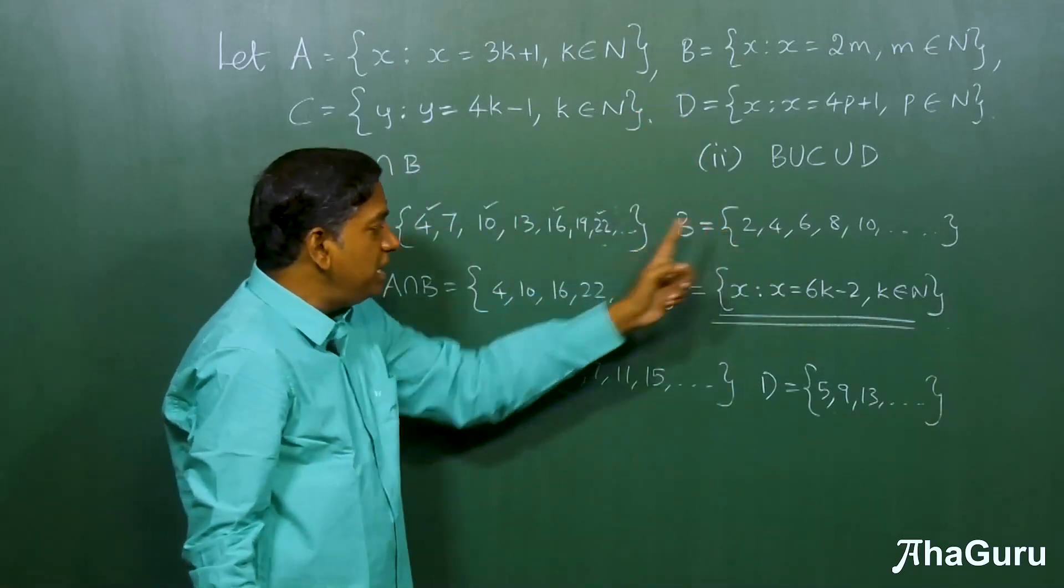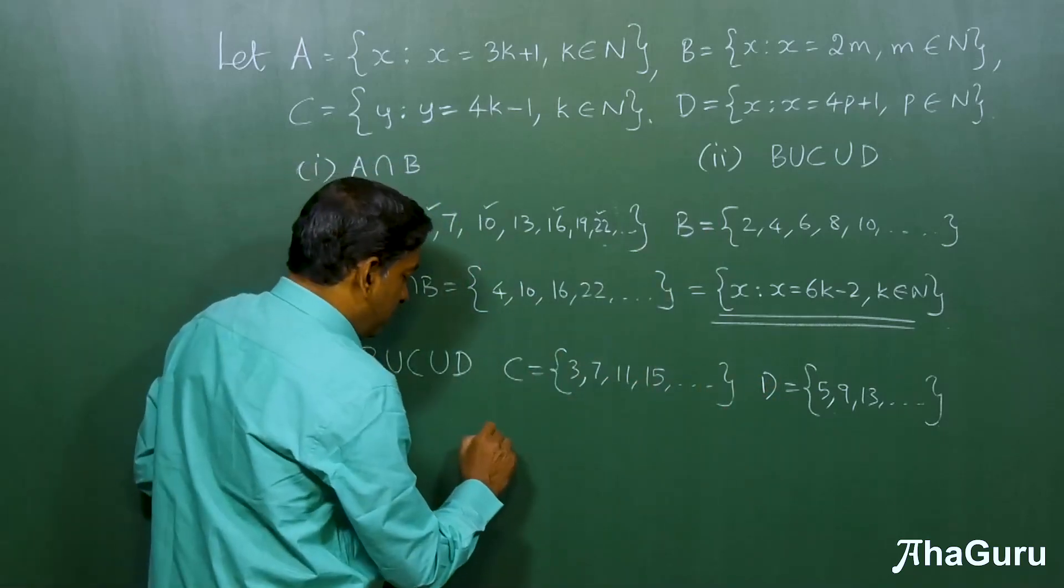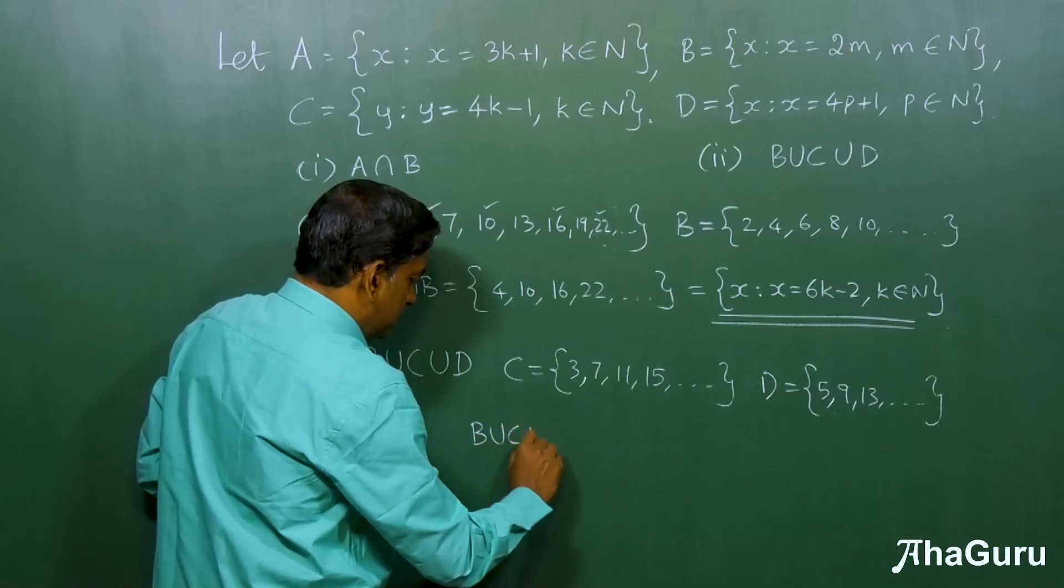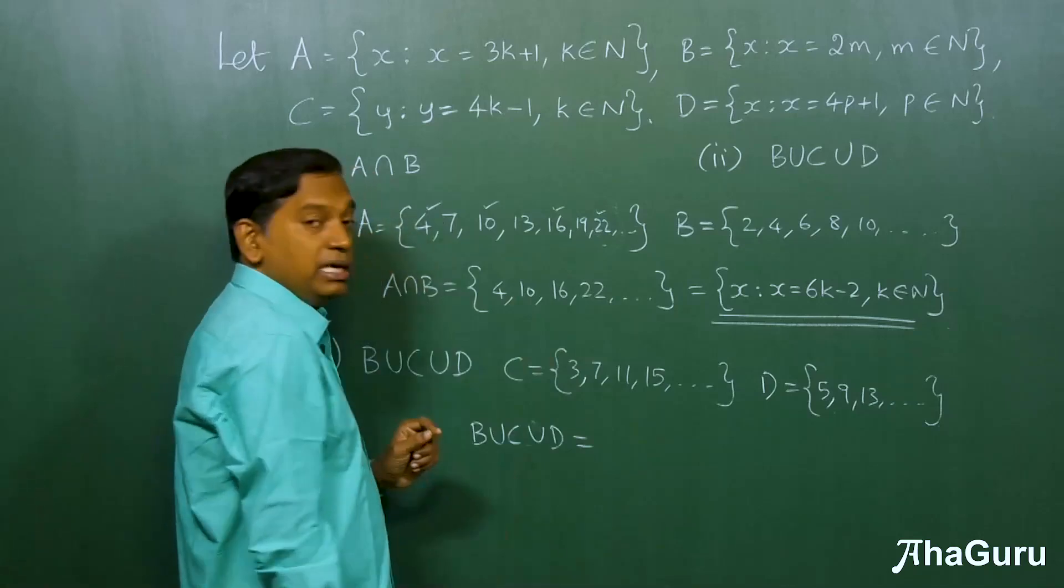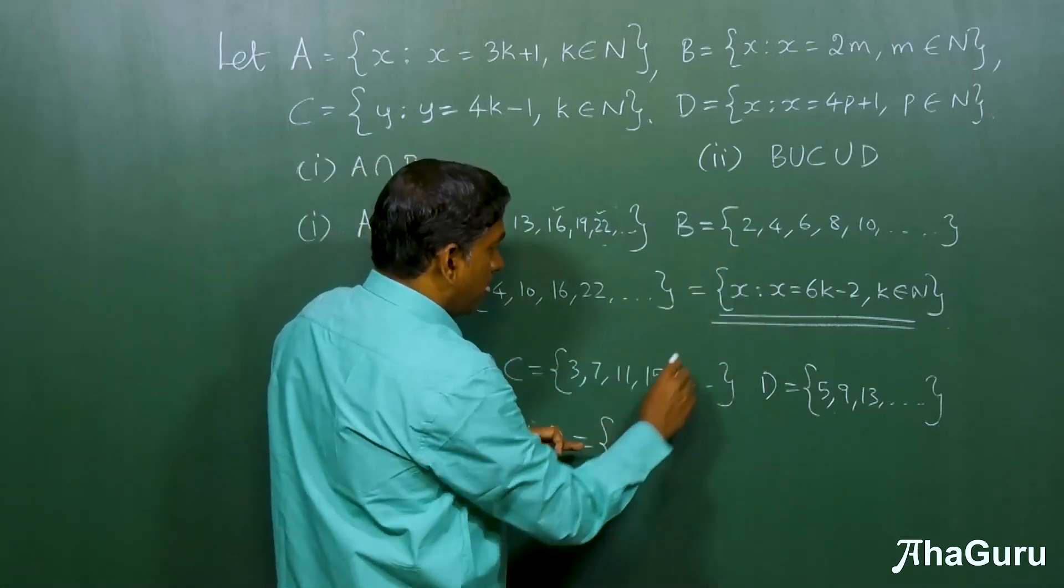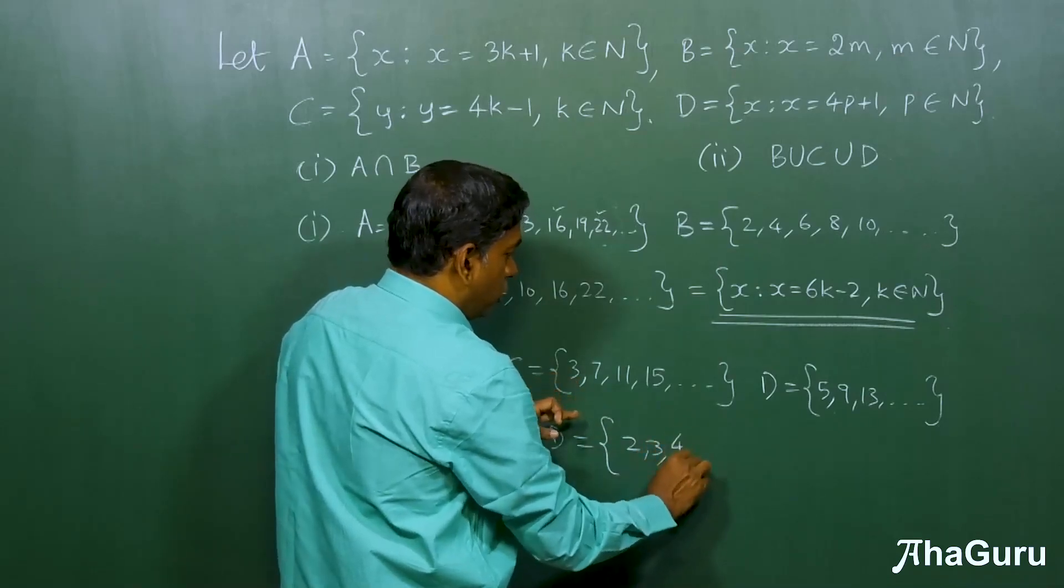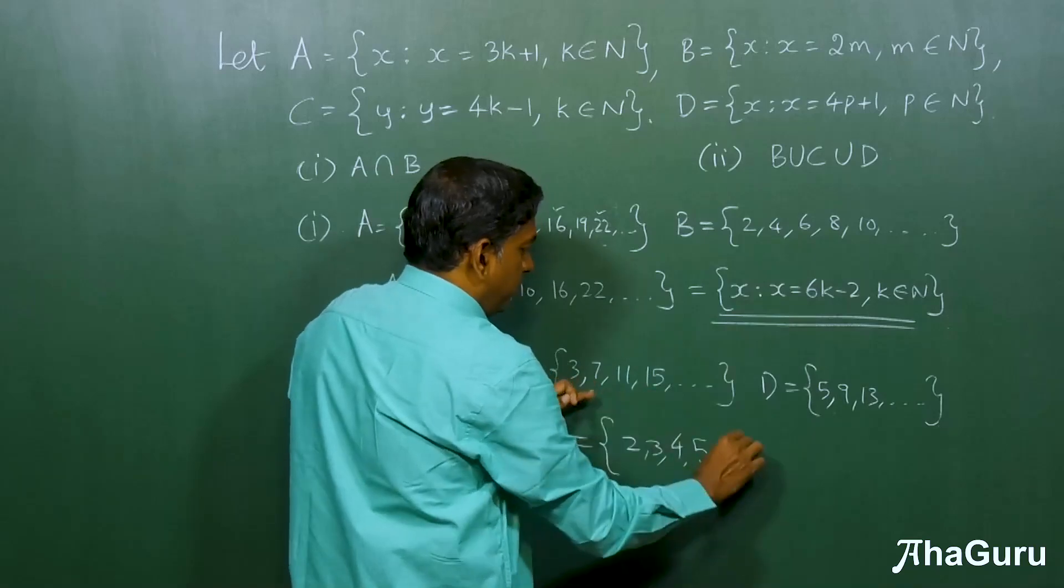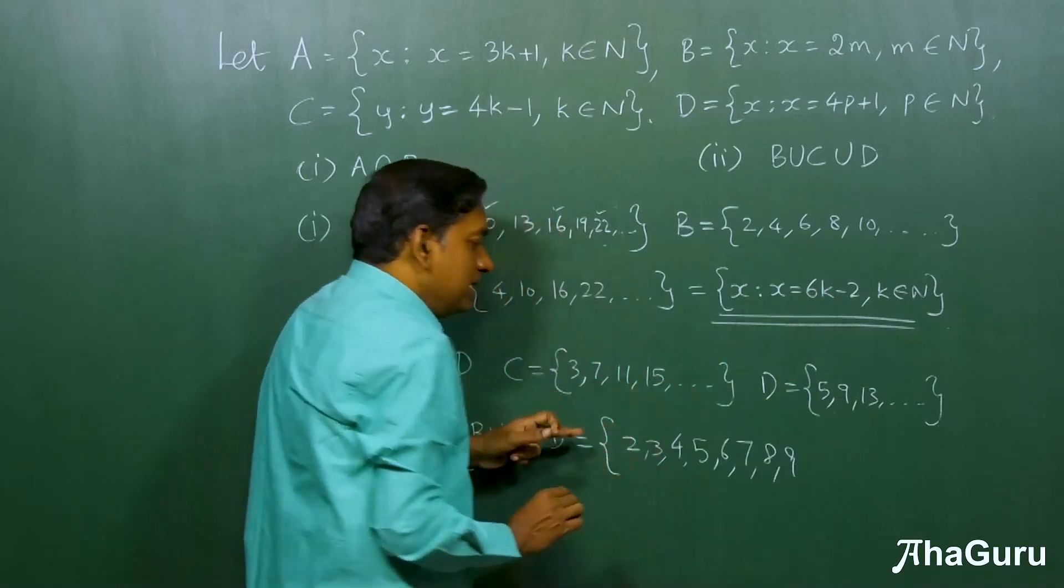What will be B union C union D? Actually, what you will find is that, B union C union D equals, let's write the list of all the elements here. You will get 2 is there, 3 is there, 4 is there here, then 5 will be here, 6 will be here, 7 will be here, 8 is here, 9 is here.